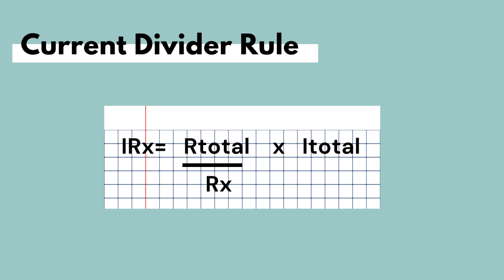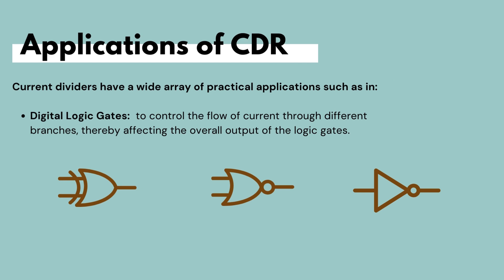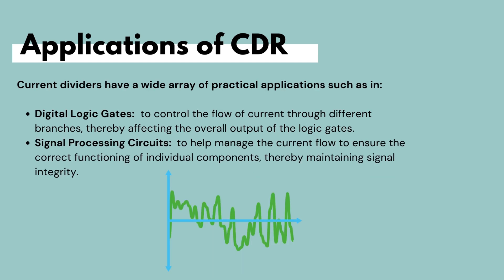Current dividers are very important and widely used in the design of electrical circuits. They are necessary to distribute current to various components in specific proportions. Some examples include digital logic gates, signal processing circuits, and power distribution networks. In digital logic gates, current dividers control the flow of current through different branches, affecting the overall output. In signal processing circuits, current dividers help manage current flow to ensure correct functioning of individual components, thereby maintaining signal integrity.